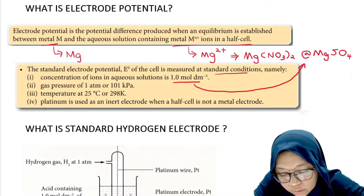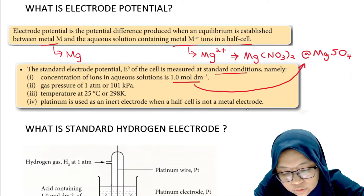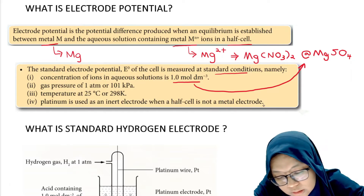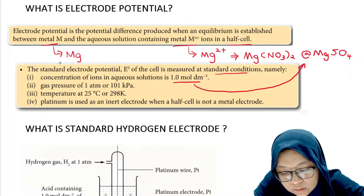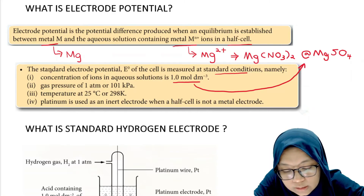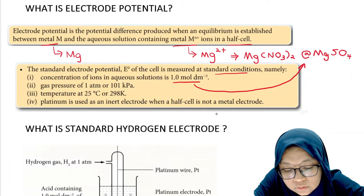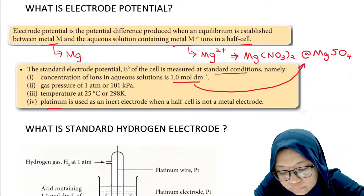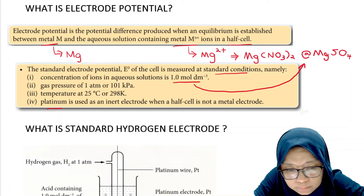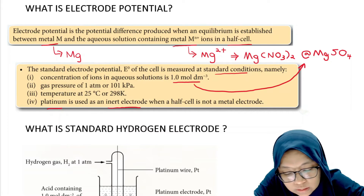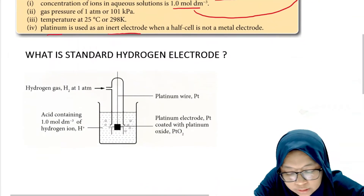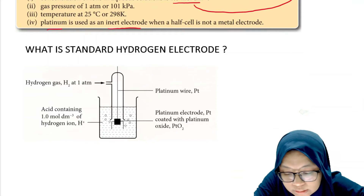The third standard condition is temperature at 25°C or 298 K. The fourth condition is that we will use platinum as an inert electrode when a half cell is not a metal electrode. This doesn't apply to magnesium since magnesium is a metal, so you use magnesium as the electrode. But if the half cell is not a metal, we will use platinum to replace the metal electrode because it is an inert electrode.